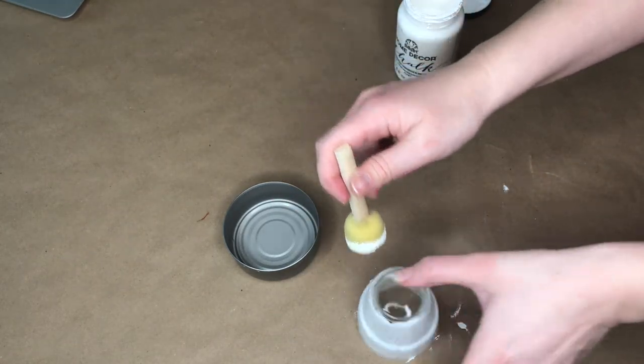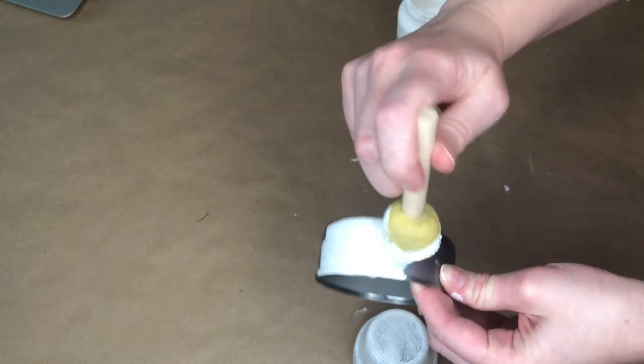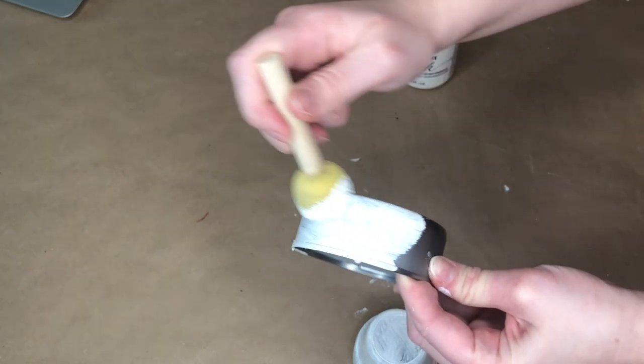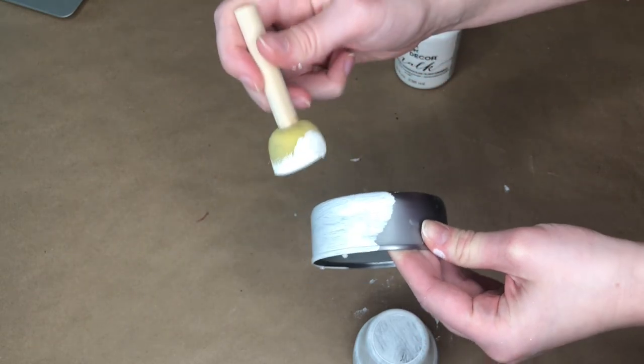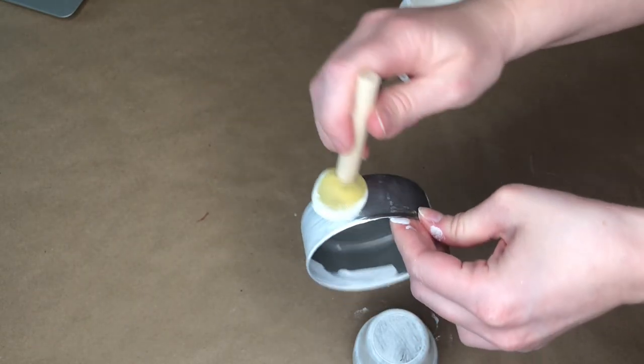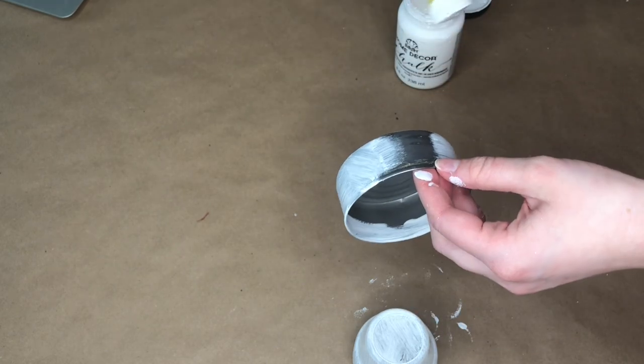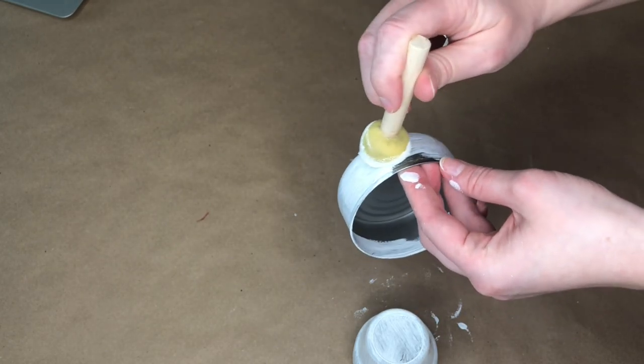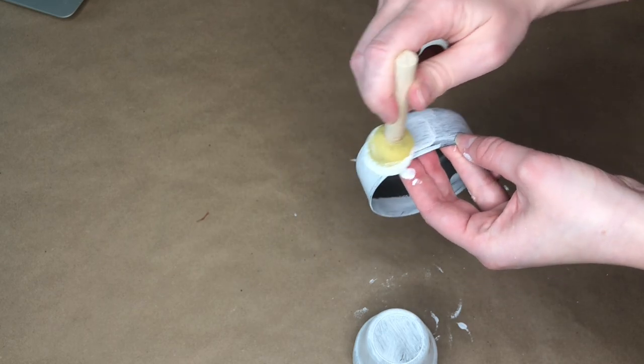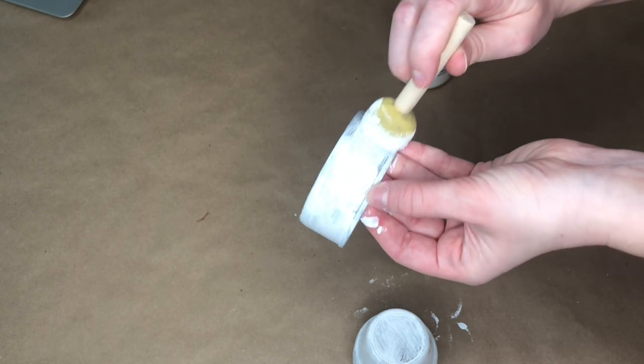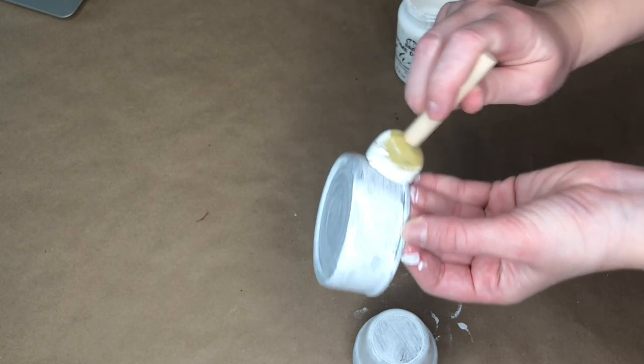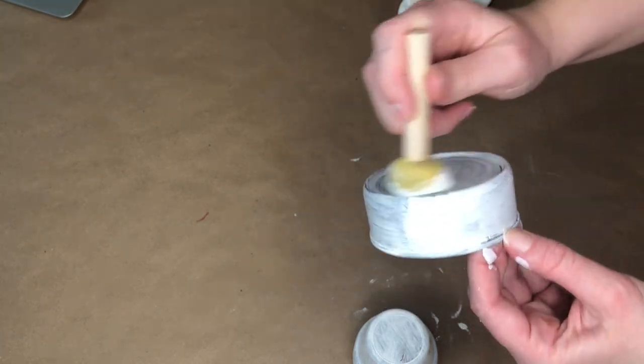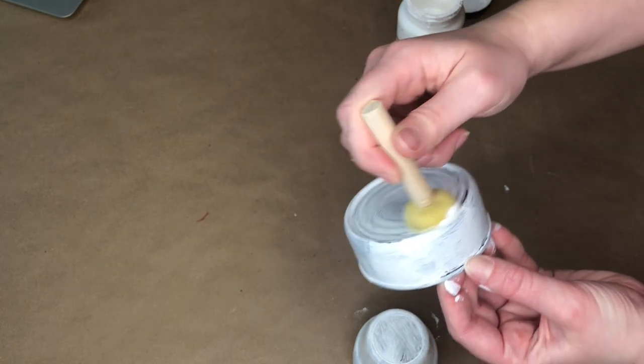While the glass jar was drying, I moved on to my tuna can and yes, you heard that right, I am using a used tuna can in this DIY, but don't worry, I let it soak for a long time in some very soapy water and I cleaned it very thoroughly so there is no fishy smell to it and if you are going to use a tuna can in this DIY, please make sure to really clean it because you don't want your candle smelling. And similar to what I did with the glass jar, I'm just covering our tuna fish can in some of this white chalk paint.